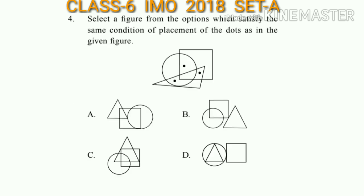Question number 4: Select a figure from the options which satisfies the same condition of placement of the dots as in the given figure. Look at the figure carefully and look at the dots. The correct answer will be option C.